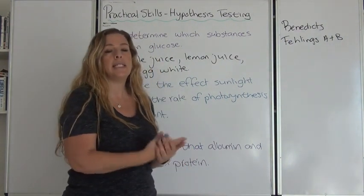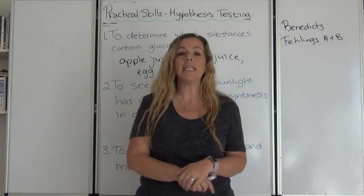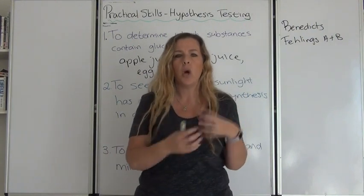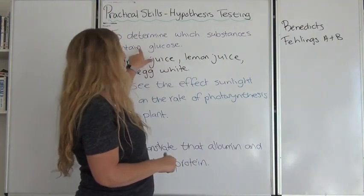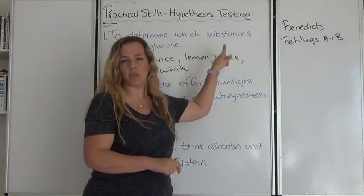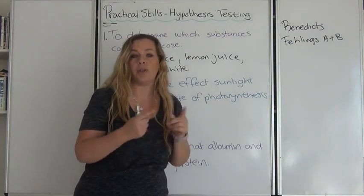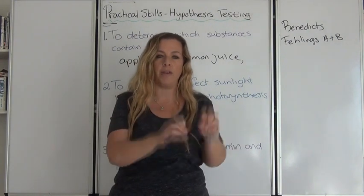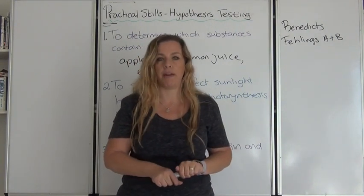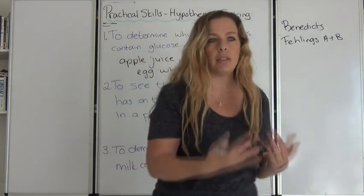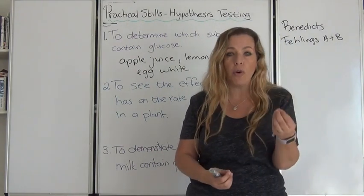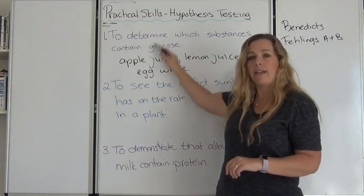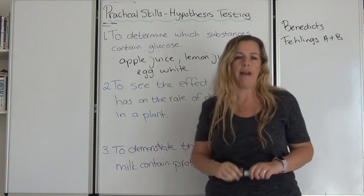Now let's look at independent and dependent variables. The independent variable is what the scientist is actually manipulating — what you as an experimenter are changing or varying in the experiment. Are you varying the substances or the glucose concentration? You can't change the glucose concentration, but you can change the substance — the apple juice, the lemon juice, and the egg white — because that is what you are putting in. That would be the independent variable. Then looking at the outcome: what are you looking for? Whether they contain glucose or not — that becomes your dependent variable.